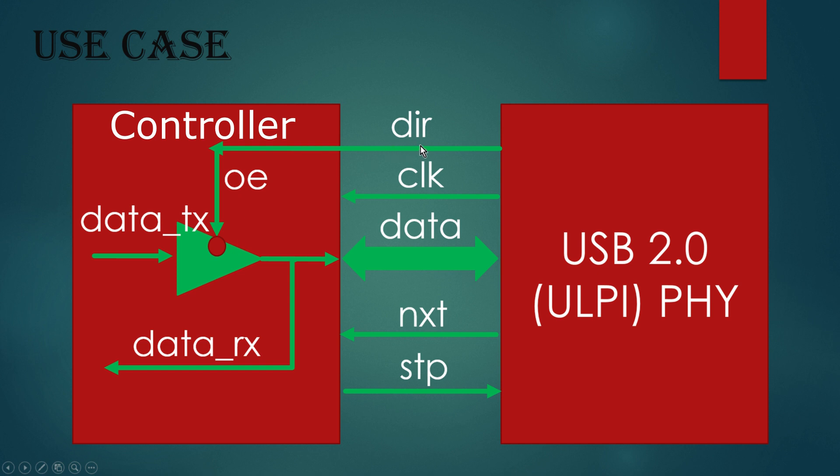Now when DIR is zero, that means DataTx will pass to the bi-directional port and finally to the physical layer.